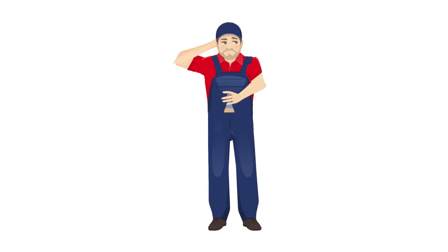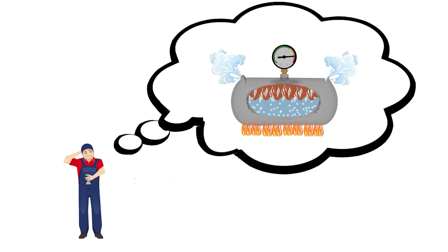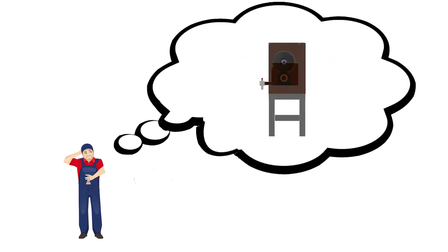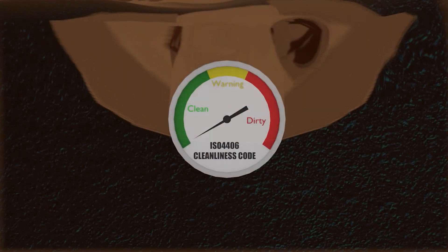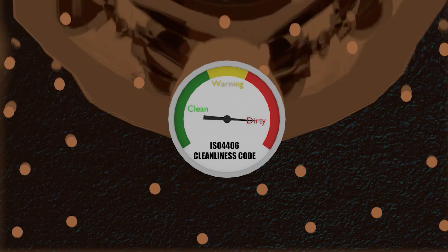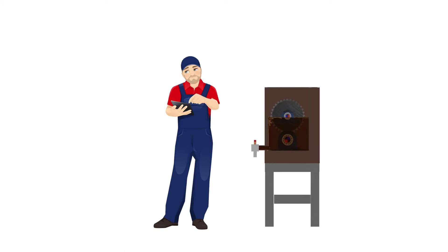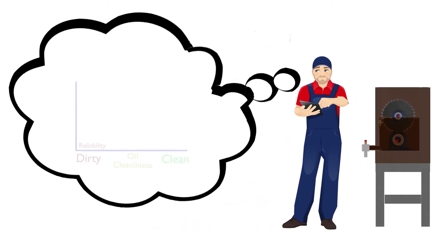What John knew he needed was some type of early warning system for the cleanliness of his oil, similar to a pressure gauge on a pressure vessel, informing him in advance of an out-of-spec operating condition. Instead of indicating pressure, this early warning system would tell John that his oil cleanliness had exceeded the required gearbox manufacturer's specification, thus allowing him to rectify the situation before his gearbox components failed prematurely. After researching online, John became aware that the reliability of his lube and hydraulic equipment increased exponentially the cleaner he kept his oil.